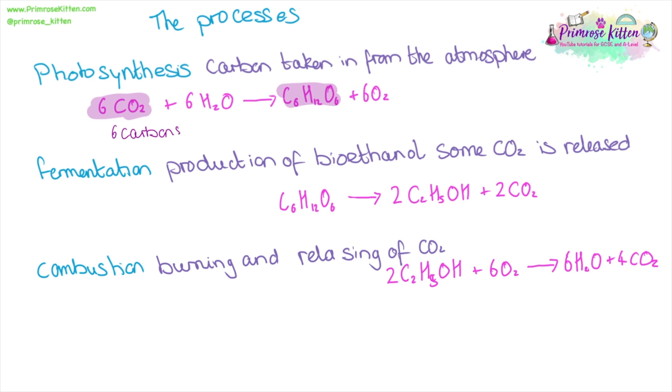We have six carbons in glucose, and they are converted into two two-carbon ethanol, so that's four carbons in total, and two carbon dioxide. That is two carbons that are released. We have our two ethanols, four carbons in total, and then from that, we have four carbons in form of carbon dioxide being released.